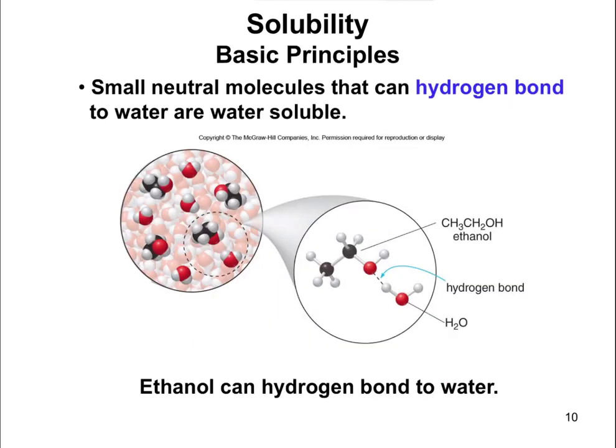Similarly, in terms of like dissolves like, if something can hydrogen bond, it's going to be soluble in water, because water can form a hydrogen bond. So anything that can hydrogen bond with water is also going to be soluble in water. The example here is ethanol. Ethanol is a neutral molecule — it's not charged — but because it has an H attached to O, and hydrogen attached to O, N, or F can hydrogen bond, it can form that hydrogen bond and it's going to be soluble in water.